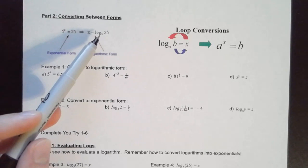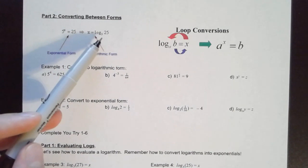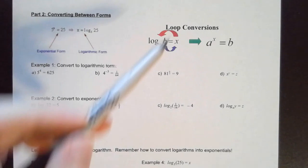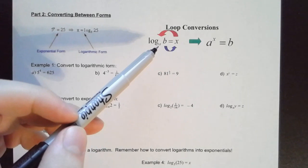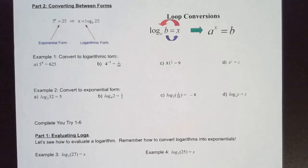Log base 5 of 25 equals X. This diagram shows how the pieces of our equation move around as we convert from exponential form to log form, hopefully giving you a better visualization of how these things move.